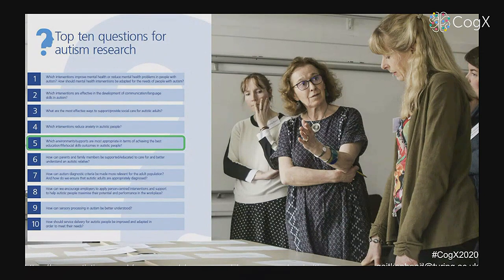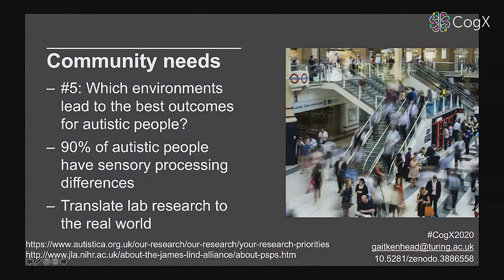The research question itself comes from this extensive priority-setting exercise. We know that 90% of autistic people have sensory processing differences — in fact it's one of the diagnostic criteria for autism — but much of the research is lab-based and we need to be able to translate it into the real world. How does it affect people in their day-to-day lives?